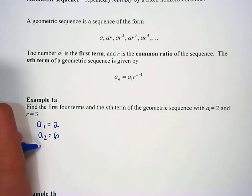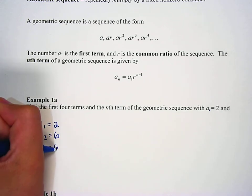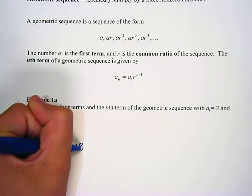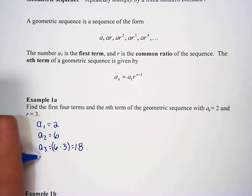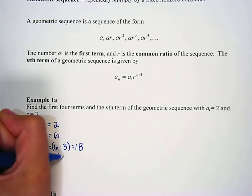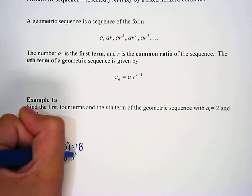Okay, I was hoping for 2 times 3 equals 6, but that's okay. The third term is going to be the second term times 3, so a sub 3 is going to be 6 times 3, which is 18. Very good. And then the fourth term is going to be a sub 4 equals 18 times 3, which is 54.